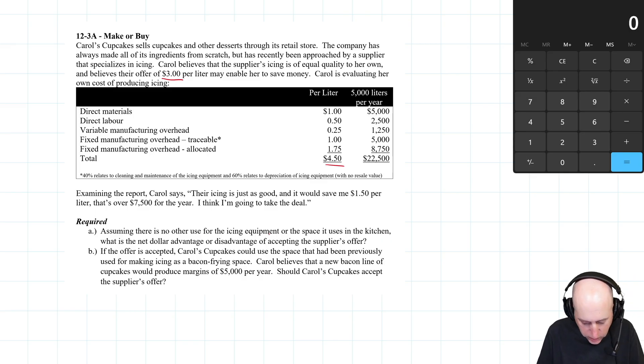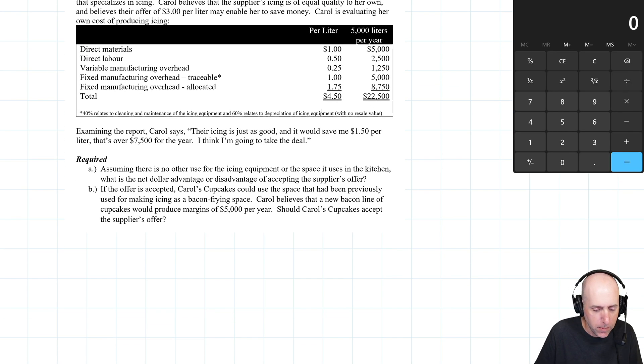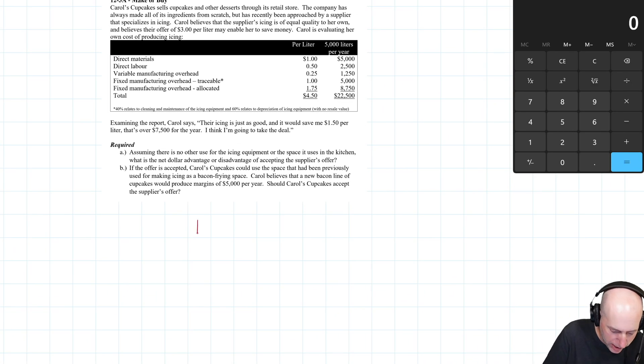Assuming there's no other use for the icing equipment or the extra space it uses in the kitchen. What is the net dollar advantage or disadvantage of accepting the supplier's offer? Okay. I always like to just prepare a little table, make versus buy. And let's just go through our costs and determine which costs are relevant and which are not.